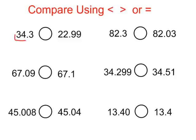The whole number here is 34. The whole number here is 22. Really, who cares about the decimals? 34 is larger than 22. And remember, the arrow always points at the smaller number, or is eating the larger number.